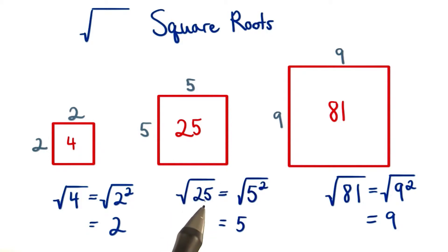The same thing happens for the square root of 25. We rewrite 25 as 5 squared, and then we take the square root of 5 squared, which equals 5. And the same is true for this third case. We have the square root of 81, which gives us 9.